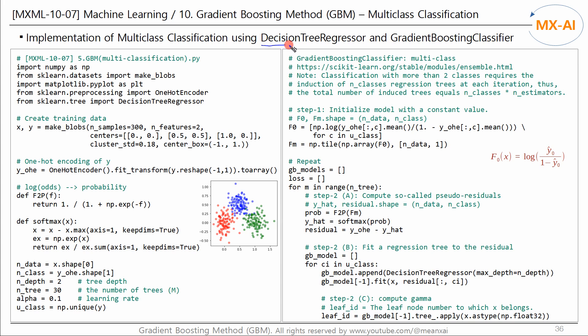Let's use DecisionTreeRegressor and GradientBoostingClassifier to implement multiclass classification of GBM. You can easily implement this using the GradientBoostingClassifier, but let's use the DecisionTreeRegressor to understand how the algorithm works in more detail. And let's compare the two results.